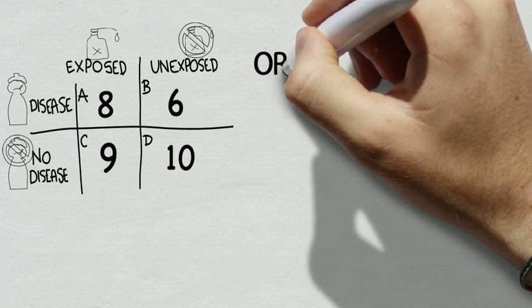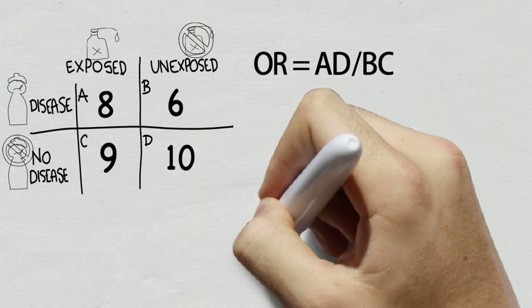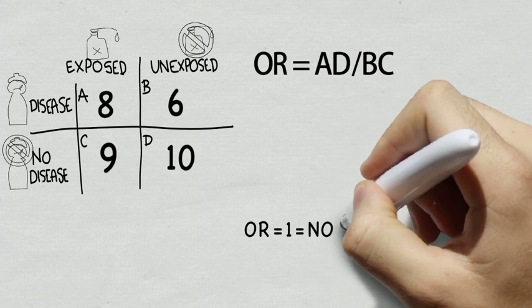The formula for odds ratio is A times D over B times C. But wait, what does this number tell us?